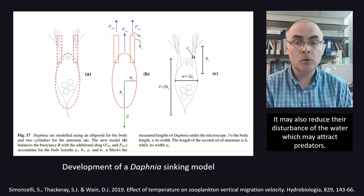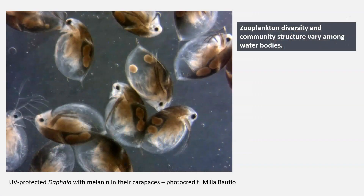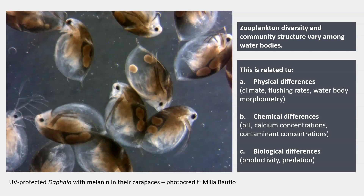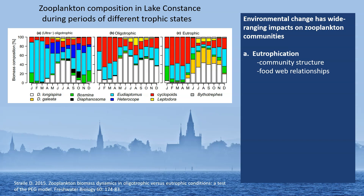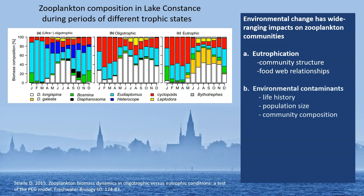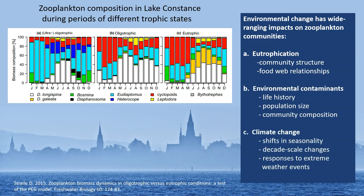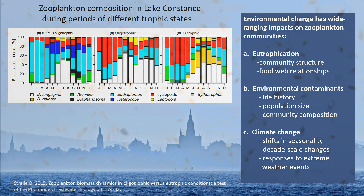It may also reduce their disturbance of the water, which may attract predators. Zooplankton diversity and community structure vary among water bodies. This is related to physical differences such as climate or flushing rates, chemical differences such as pH and calcium, and biological differences in productivity and predation. Environmental change has wide-ranging impacts on zooplankton communities: eutrophication with effects on community structure and food web relationships; environmental contaminants which may affect life history and population size; and climate change causing shifts in seasonality, decade-scale changes, and responses to extreme weather events.